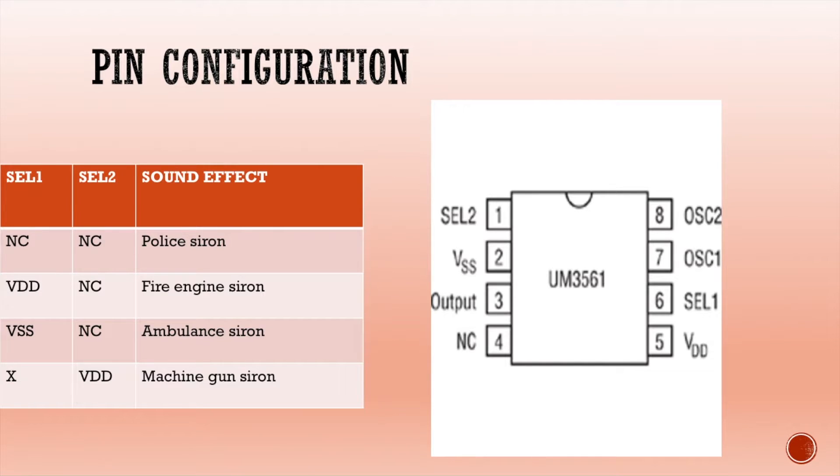This is the pin configuration of the UM3561 DIP IC. Pin number 1 is SEL2. VSS is the ground pin, negative of your battery or power supply. Pin number 3 is the output pin through which sound will be generated or a transistor will be driven. NC is no connection; we do not need to connect this pin to any other part or VCC or ground.